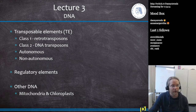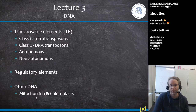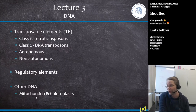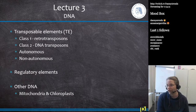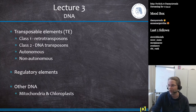We also talked about regulatory elements — insulators, enhancers, TATA boxes, and metal-sensing elements — but I won't ask in too much detail about those. Also know the difference between a mitochondrion and a chloroplast: mitochondria produce ATP (the powerhouse of the cell), while chloroplasts do photosynthesis to produce ATP in plants.